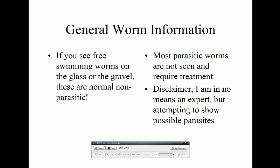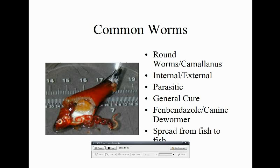Commonly, if you see a worm swimming, it's usually white or pinkish in color and normally non-parasitic. You can get them in on plants or by moving decorations between tanks. If they're free-swimming, you're generally fine. The real problem is the parasites you can't see — those require treatment, but if you don't know you have them, you don't know how to treat them. We'll start with roundworms.